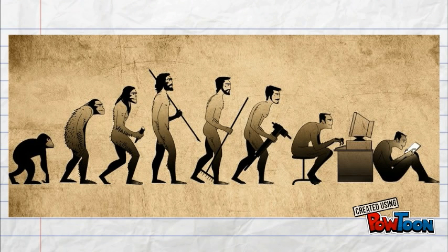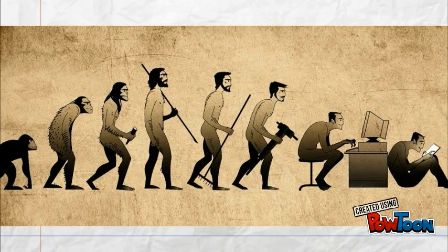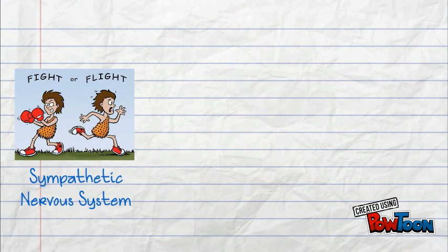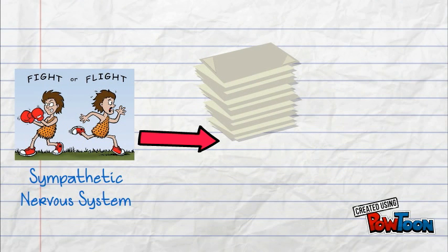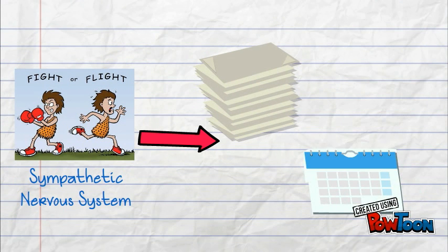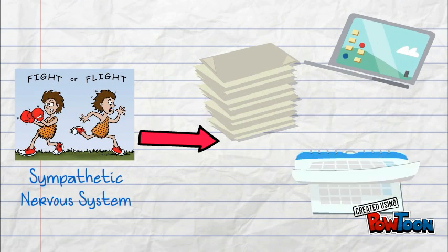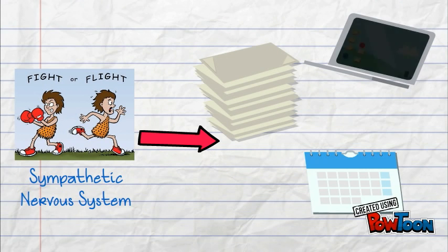Today's society has truly evolved, and we have gone from a predominantly fight-or-flight type of stress to a very chronic stress environment. We have transitioned from a predominantly sympathetic nervous system controlled stress to more chronic stress stemming from our modern-day lifestyle.